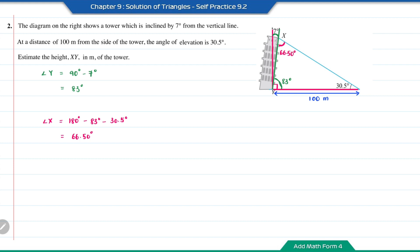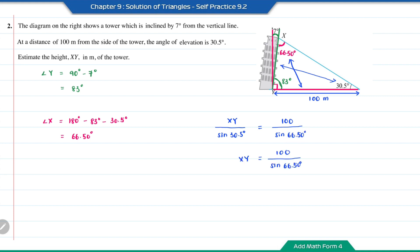Based on the diagram, height XY is opposite angle 30.5°, and the 100 meters is opposite angle 66.5°. Using the sine rule: XY over sine 30.5° equals 100 over sine 66.5°. Therefore, XY equals 100 over sine 66.5° times sine 30.5°, which equals 55.34 meters. So the height of the tower XY is 55.34 meters.